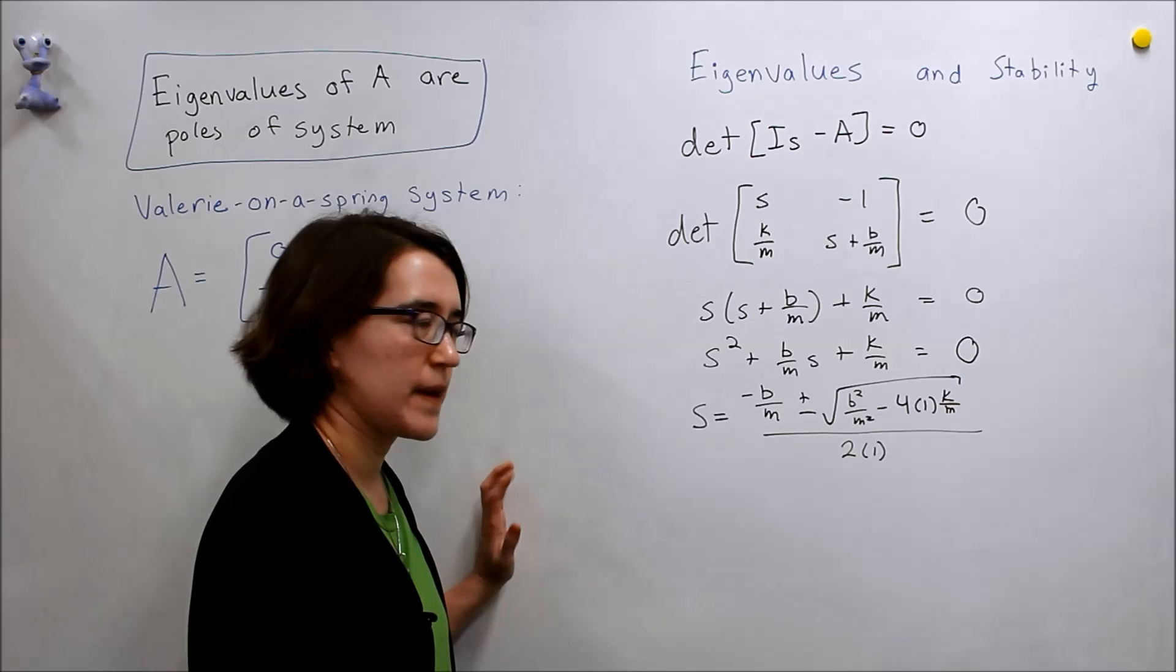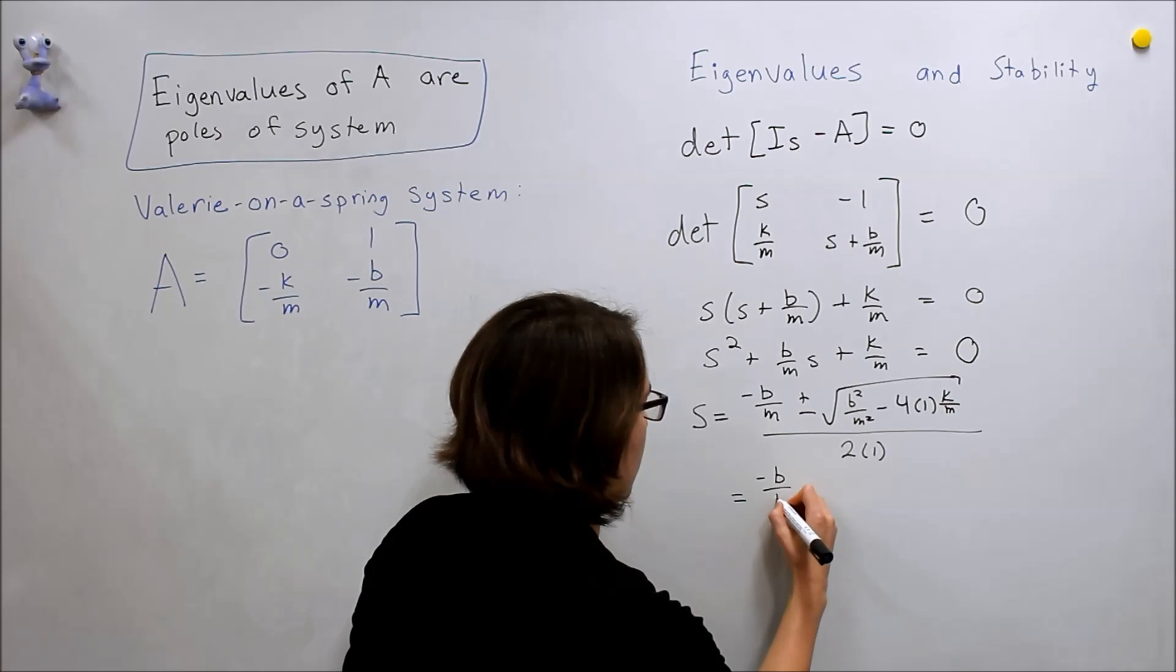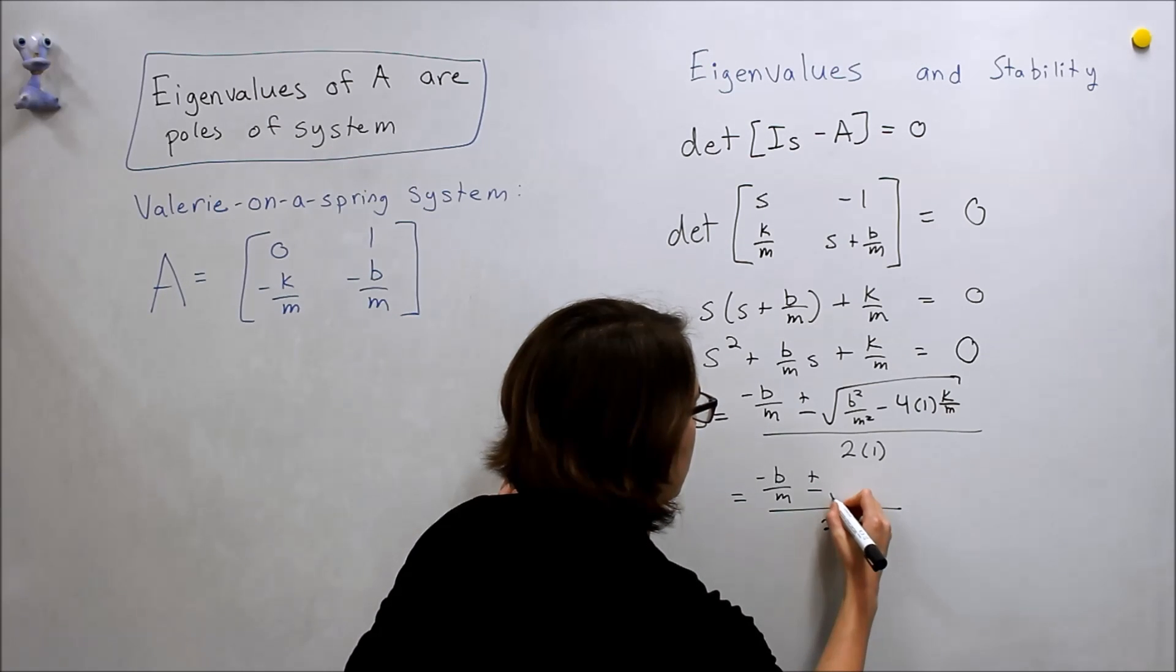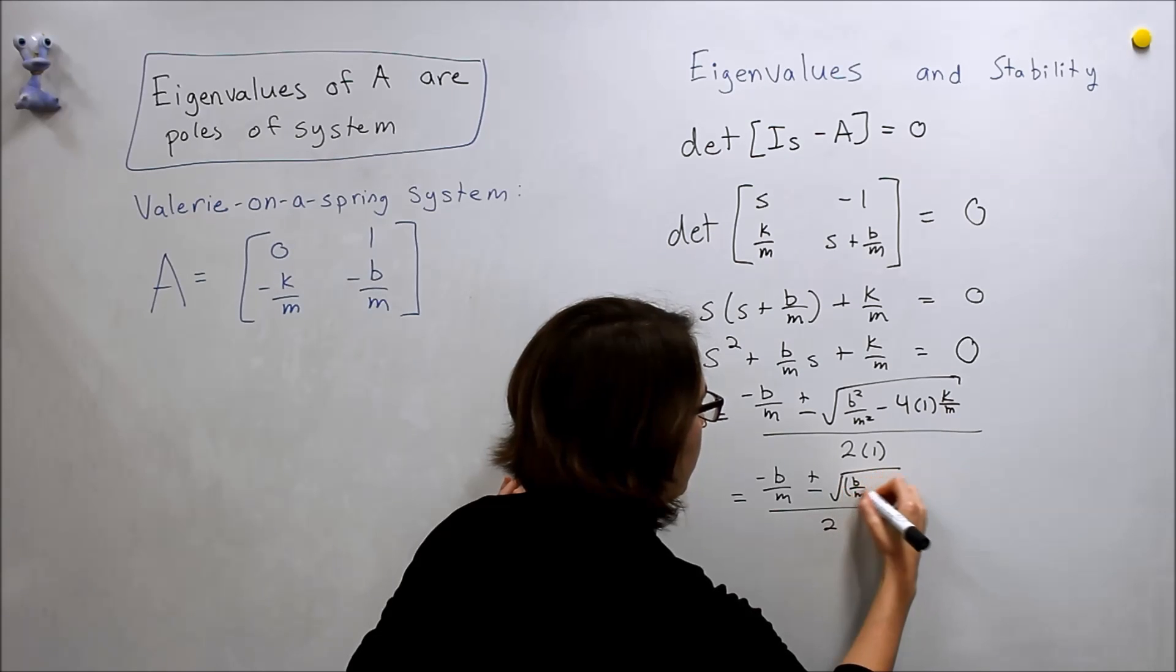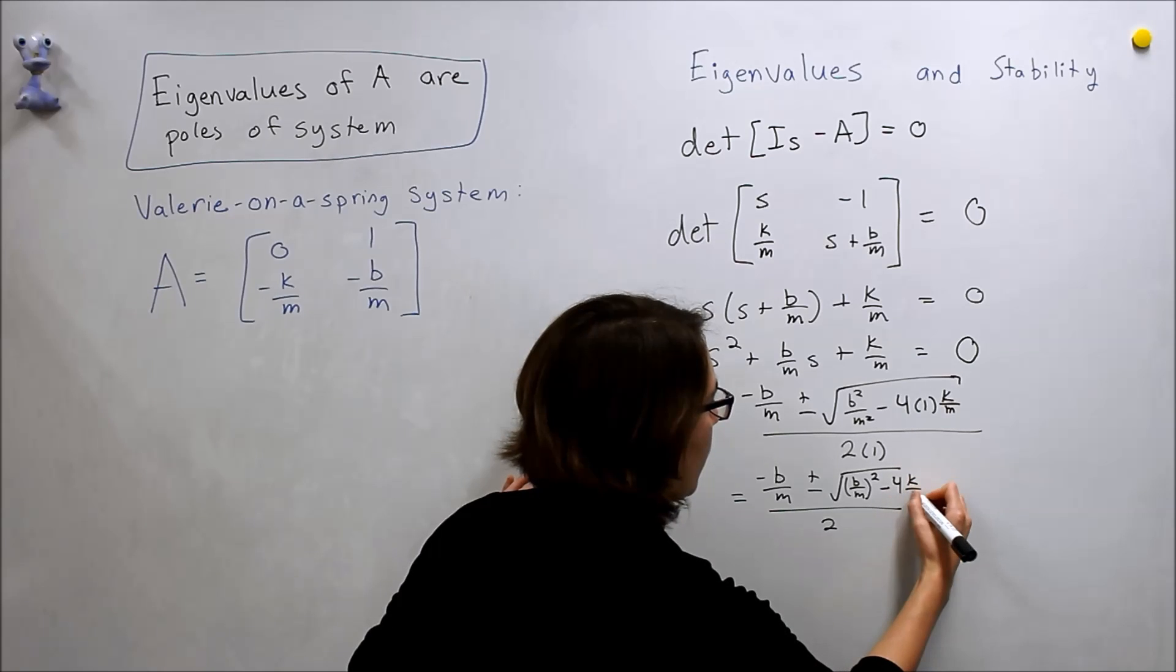So this might help us a little bit, it might not, let's just simplify it real quick. Negative B over M plus or minus, this is all over 2, again we have B over M, we'll do quantity squared, minus 4K over M.